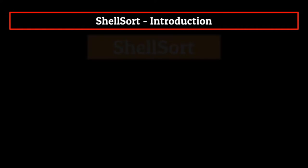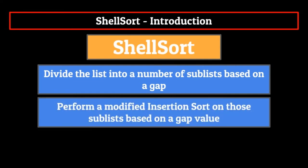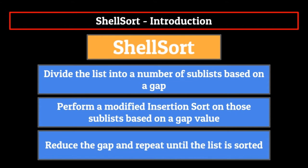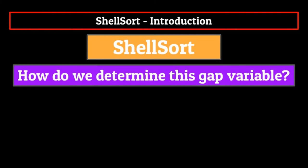That's essentially the meat and potatoes of shell sort. We divide the list into a number of sublists, and then perform a modified insertion sort on each of those sublists based on a gap value. The gap determines how far apart elements in the sublist are, and we reduce this gap on each recurring pass through the list until we finally just end up performing a basic insertion sort to finish off the sort. This does leave out a very important question though: how do we determine this gap variable? Put simply, how do we know how many elements to skip over when making our sublists?